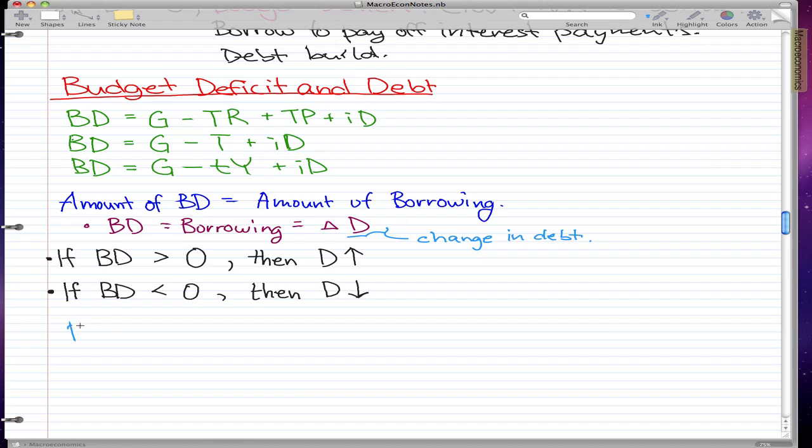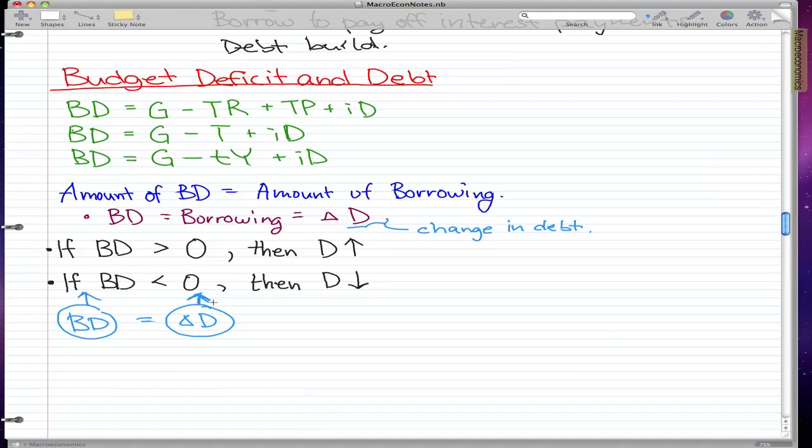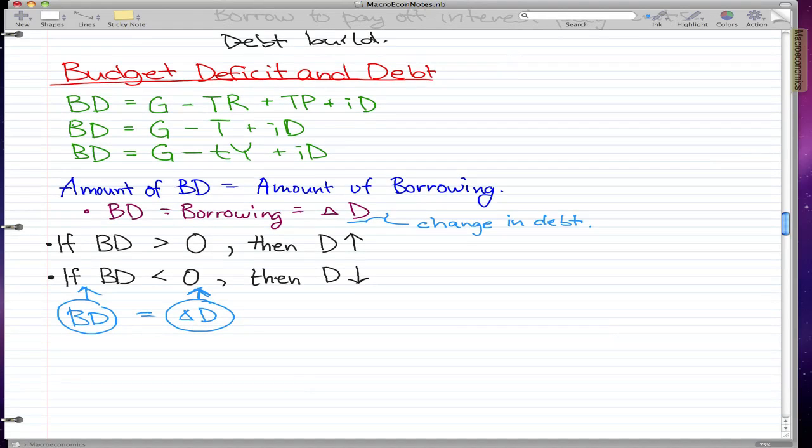Let's say that BD rises, so our borrowing rises. If our borrowing rises, that logically means that there's a change in debt. The change in debt actually rises, so we're actually carrying more debt than before.